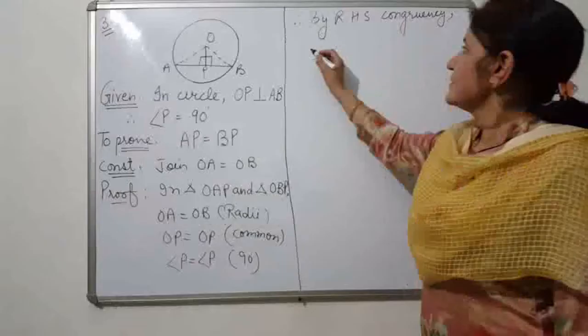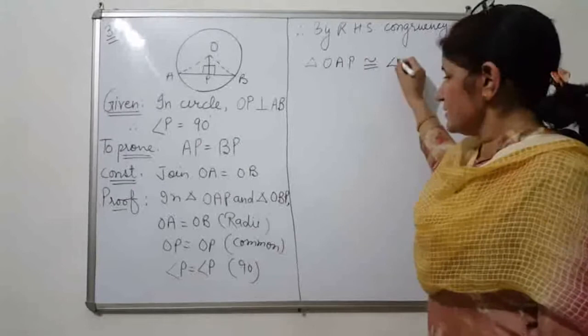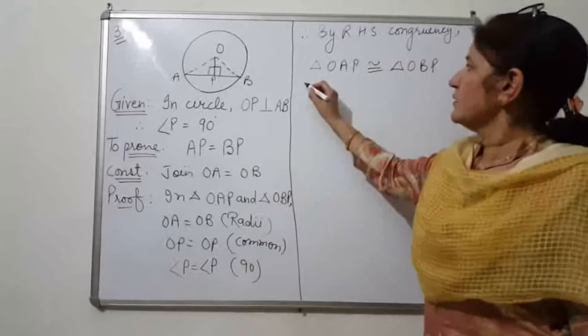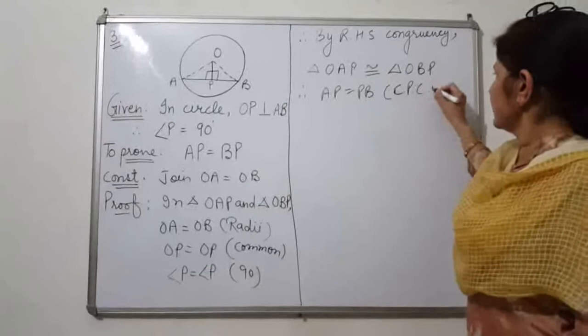Therefore, triangle OAP is congruent to triangle OBP by RHS. If triangles are congruent, then by CPCTC (corresponding parts of congruent triangles are congruent), AP equals PB. Hence proved.